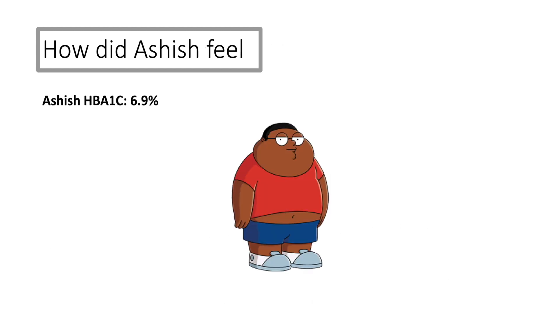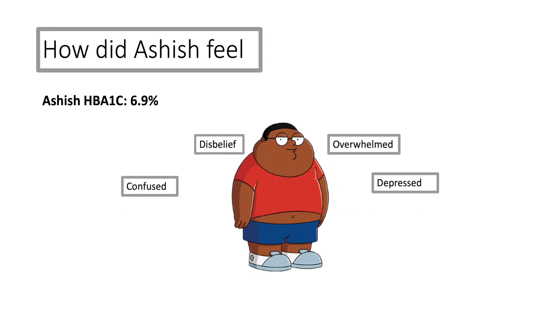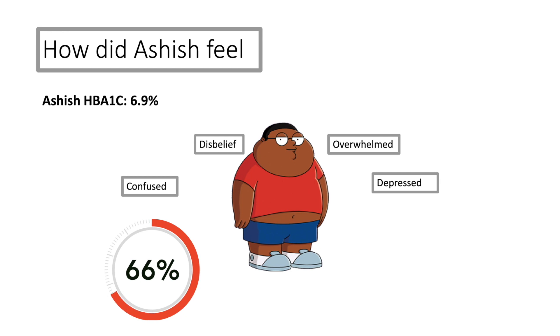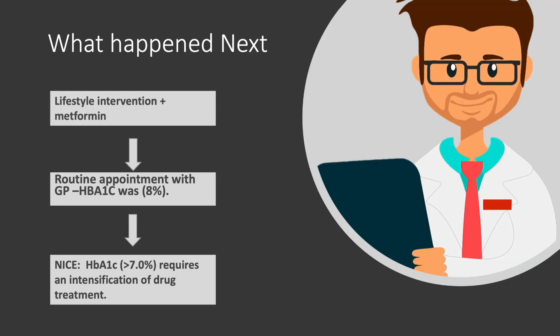So how did Ashish feel at the diagnosis? Well, he was confused, overwhelmed, in disbelief, and depressed. However, these feelings aren't unique to Ashish — around two-thirds of patients don't fully understand their diagnosis, and you are twice as likely to be depressed if you have diabetes than if you do not. The GP prescribed Ashish with metformin alongside lifestyle intervention, including weight loss, diet restriction, and exercise.